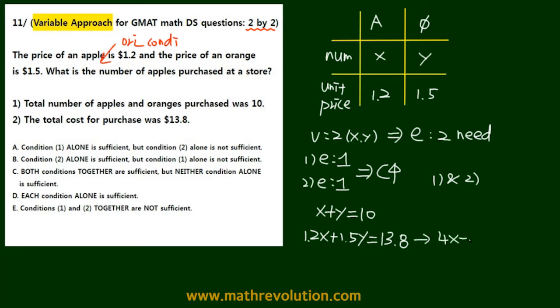So when you divide by 0.3, we have 4X plus 5Y is equal to 46. And we can multiply 4 on that side as well, 4X plus 4Y is equal to 40. Subtract the two equations. What you get is negative Y is equal to negative 6, such that Y is 6, X is 4.